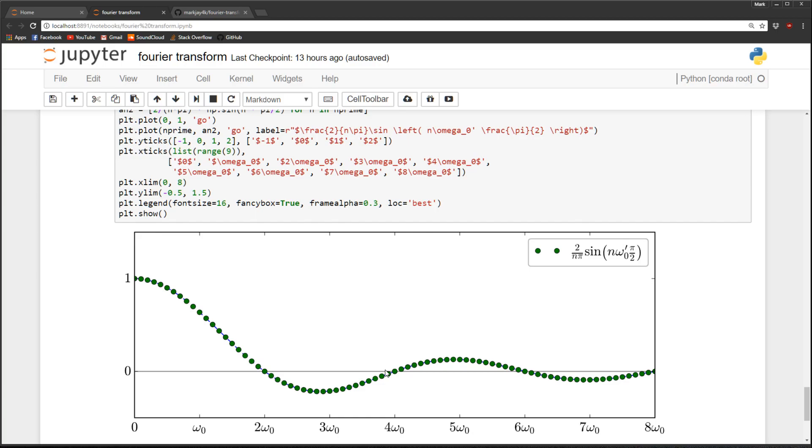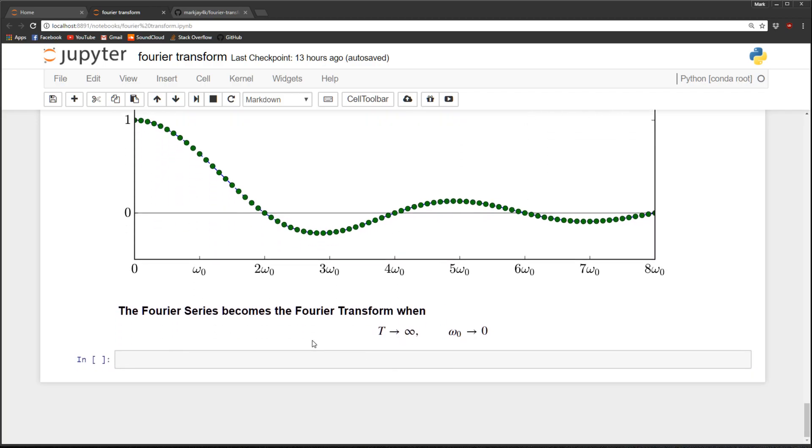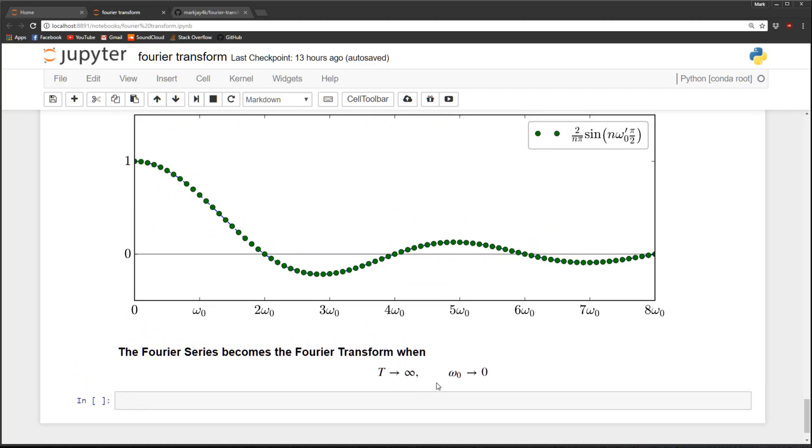So at the limit where we push these things really far out, basically making T go to infinity, that means that our spacing between points is going to go to zero. And this discrete points along this curve is just going to become that curve. It's just going to be a continuous continuum of frequencies.